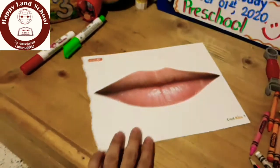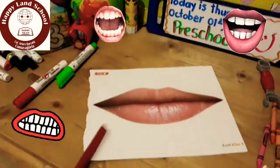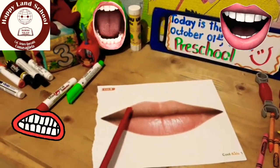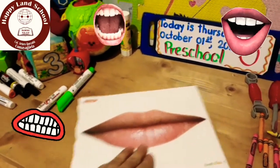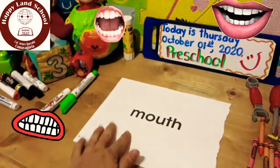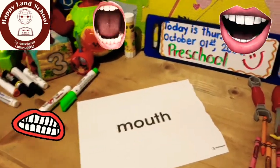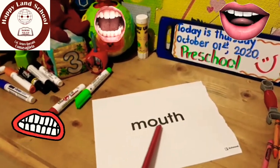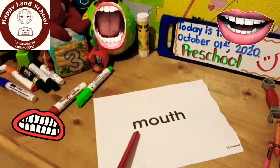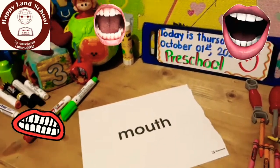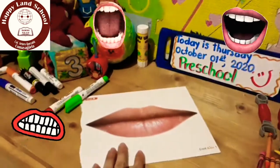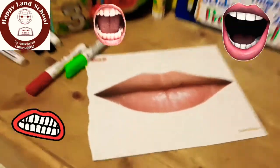Next, we have another part of the body: the mouth. Mouth. The mouth includes the lips and teeth. Repeat: mouth. Good job!